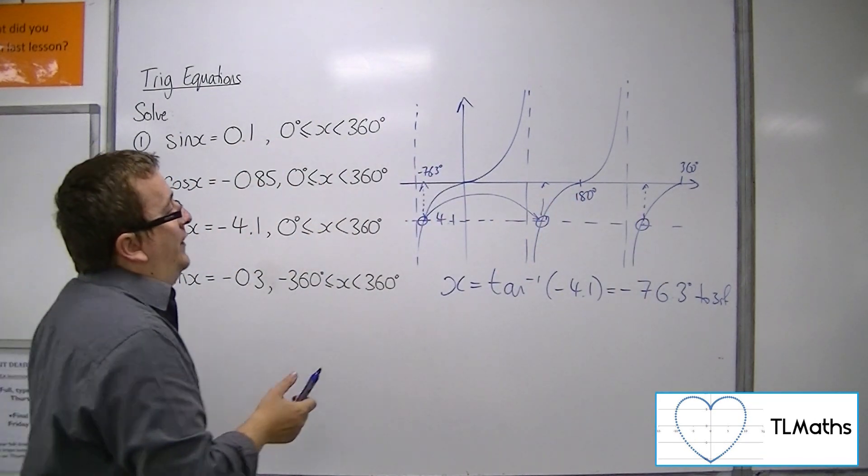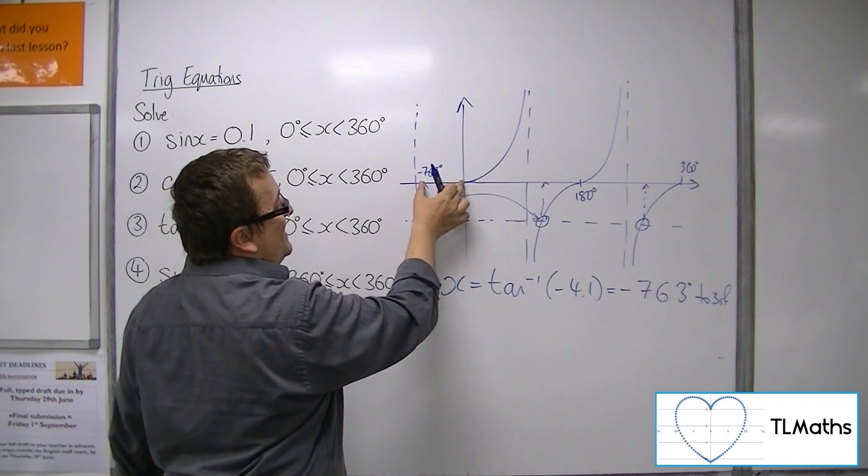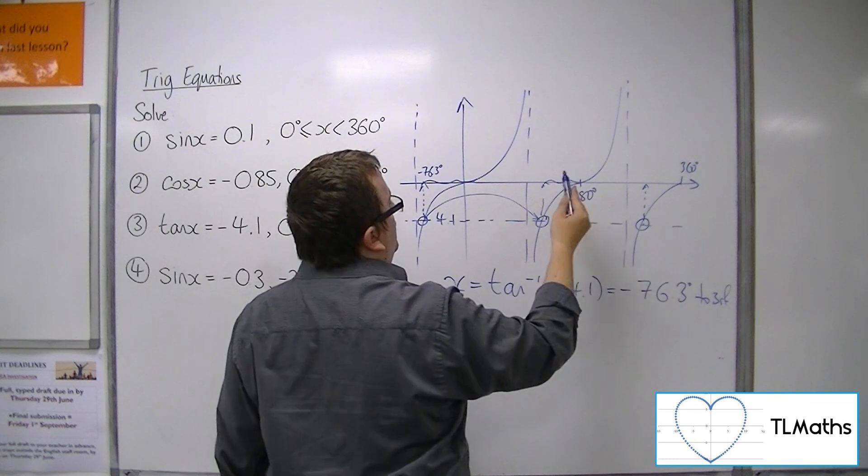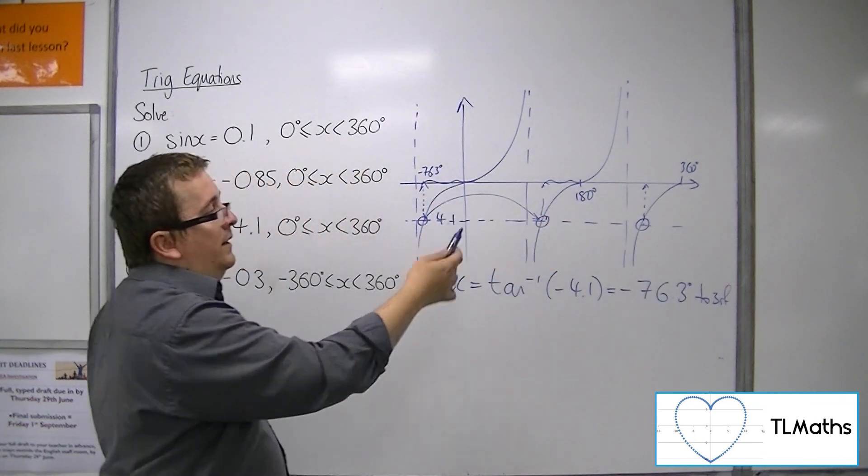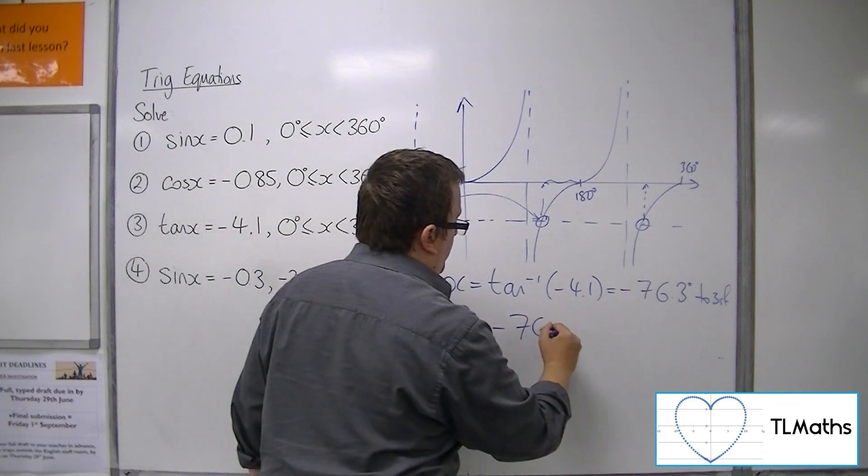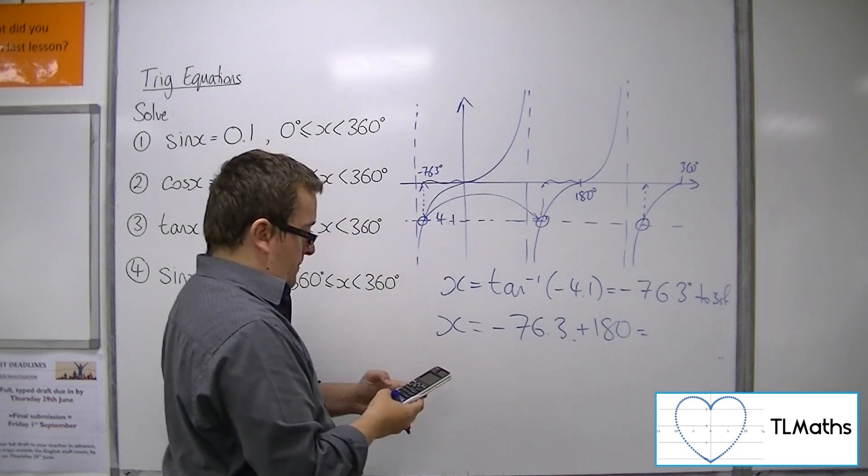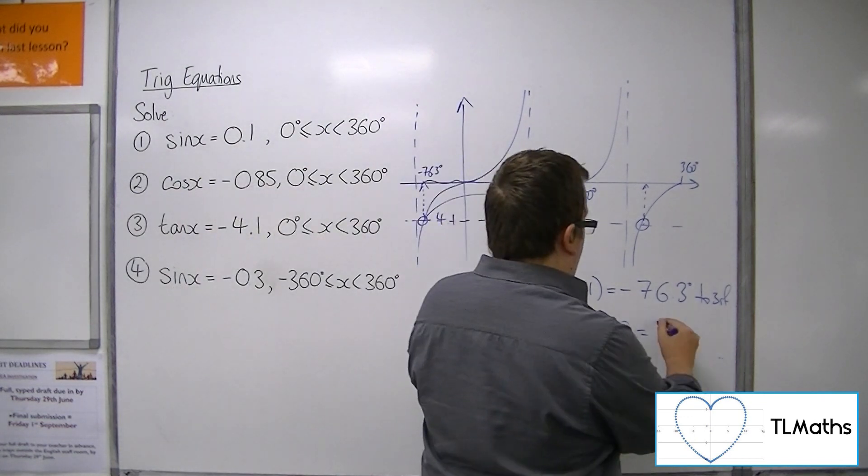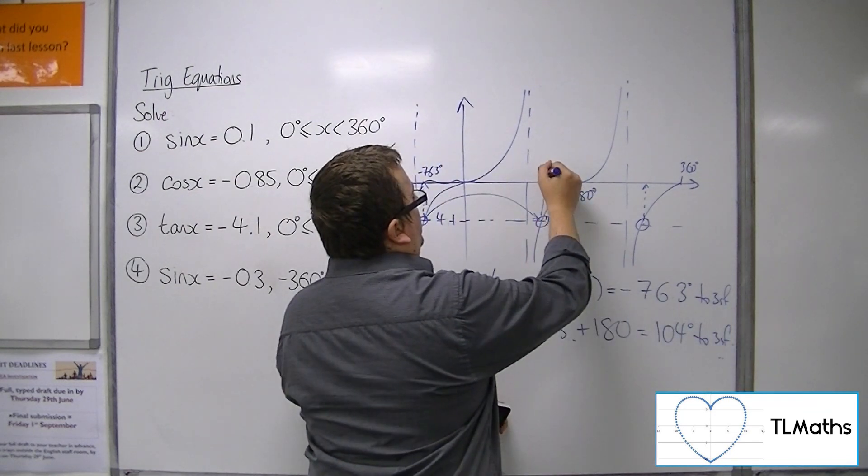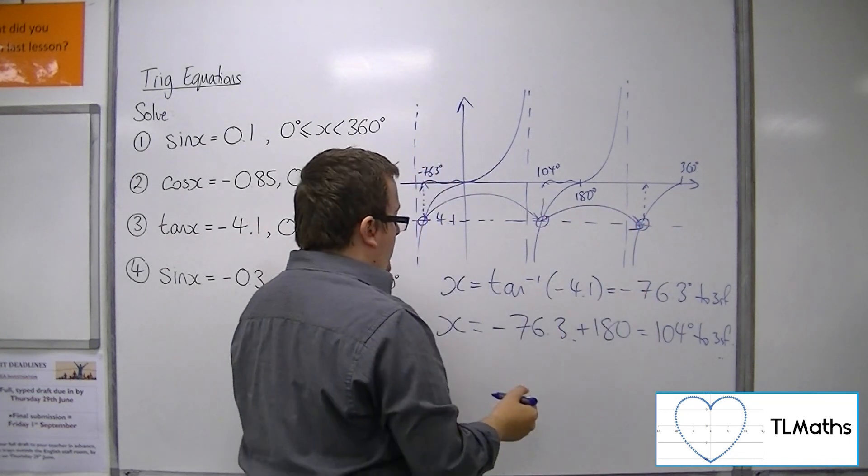Now you can visualize this by thinking that is minus 76.3 or 76.3 in distance, and so that must be 76.3 in distance as well. So you can do 180 take away 76.3 if you want to think of it that way. Personally I prefer to think of it as adding on 180. So add on 180, we get 104 degrees to 3 sig fig.